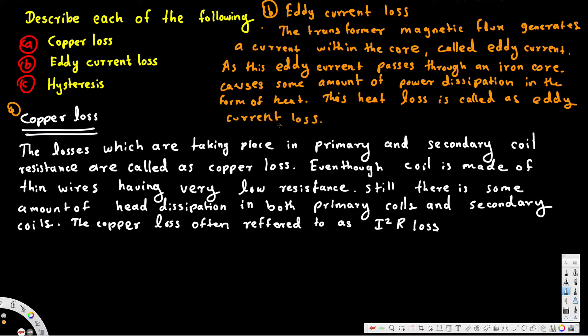Now the third part is asking what is hysteresis. Hysteresis loss refers to the energy expended to overcome the core's retentivity. Retentivity is the ability of a material to retain its magnetic characteristics after the magnetizing force has been removed. When AC supply is given, the input current reverses its polarity, and the polarity of the magnetic field must also reverse to do this — it must overcome the retentivity of the core material.